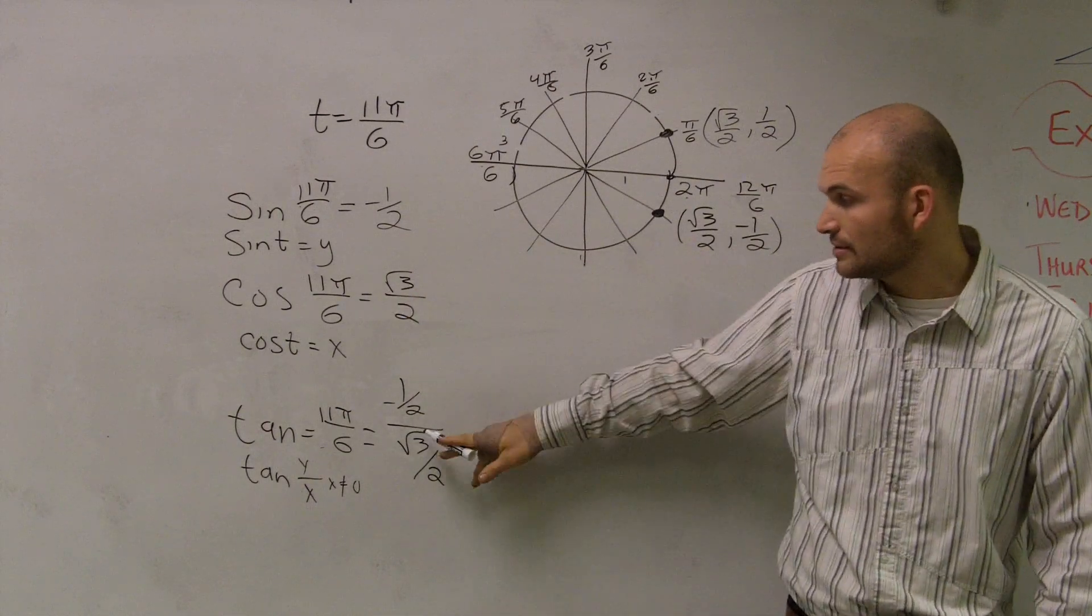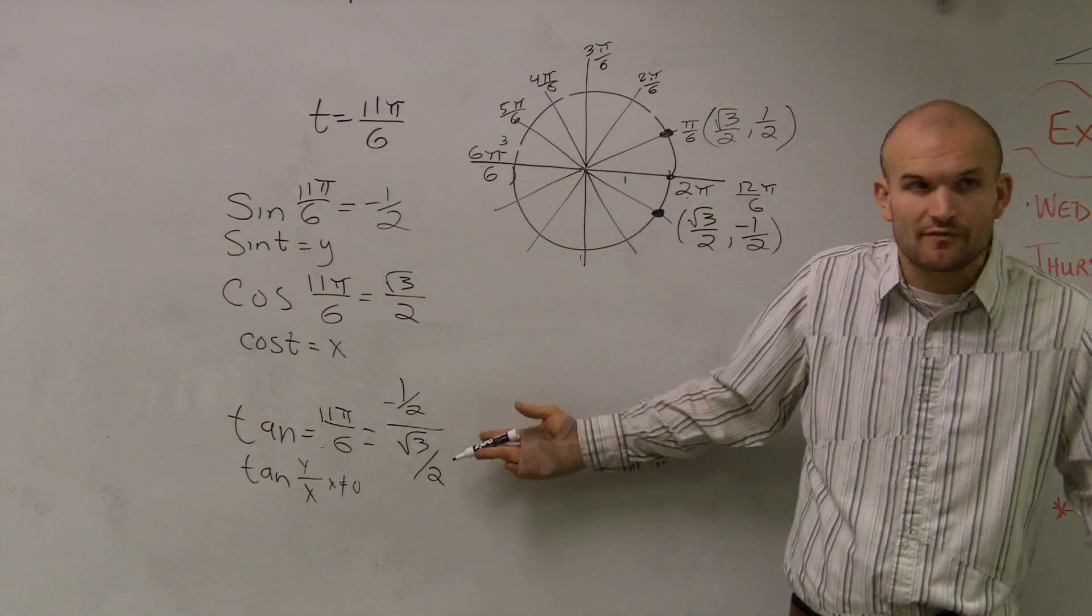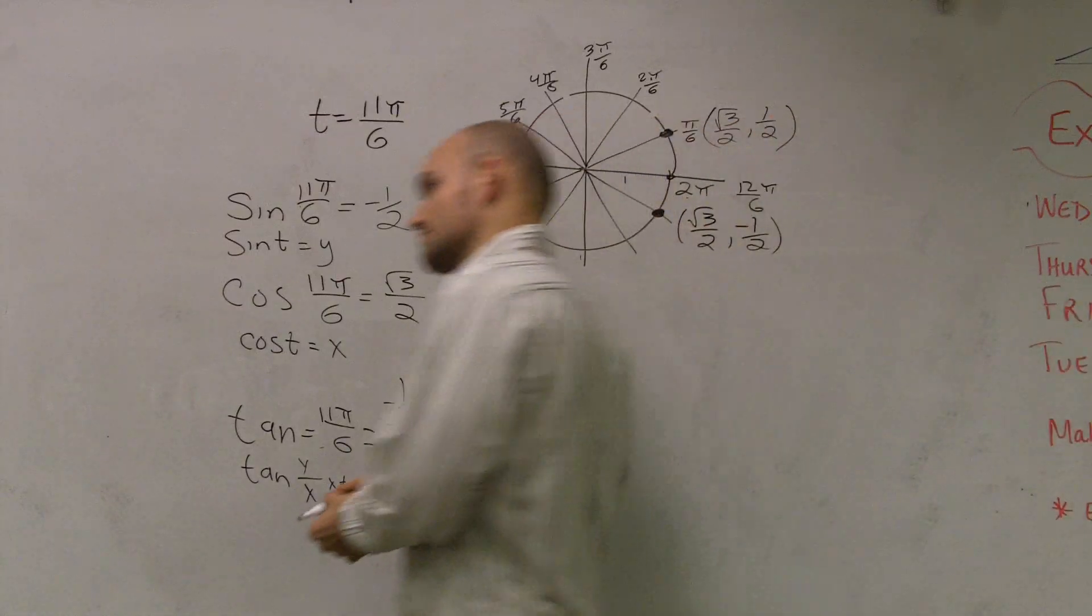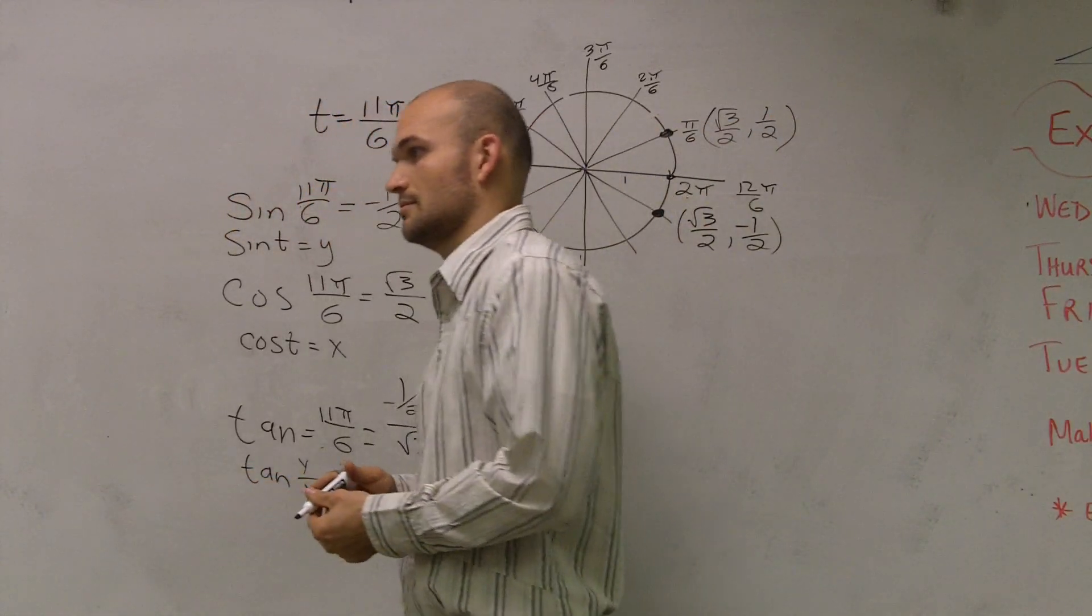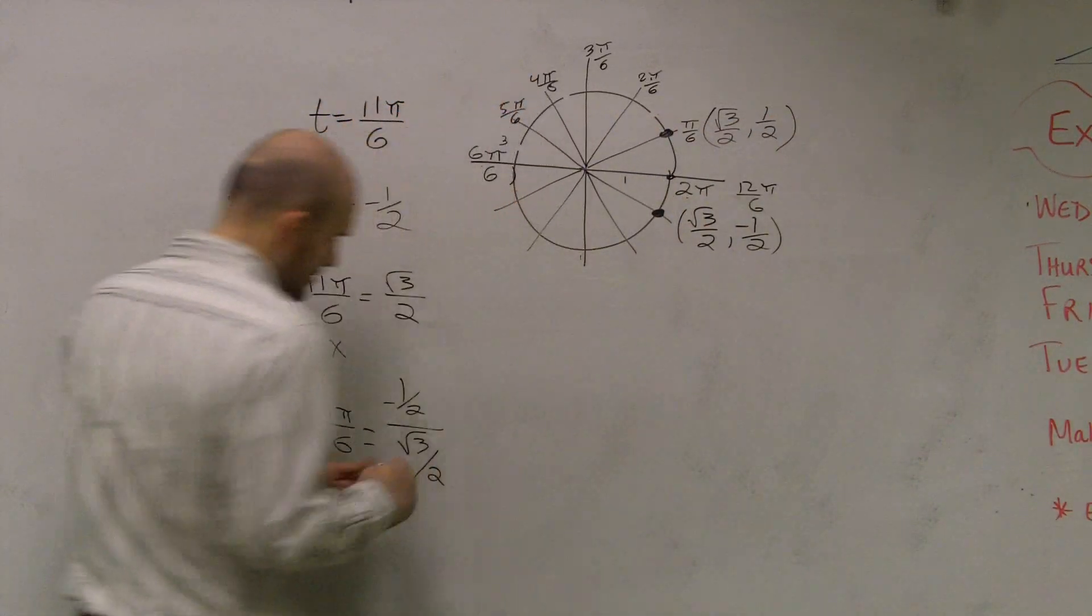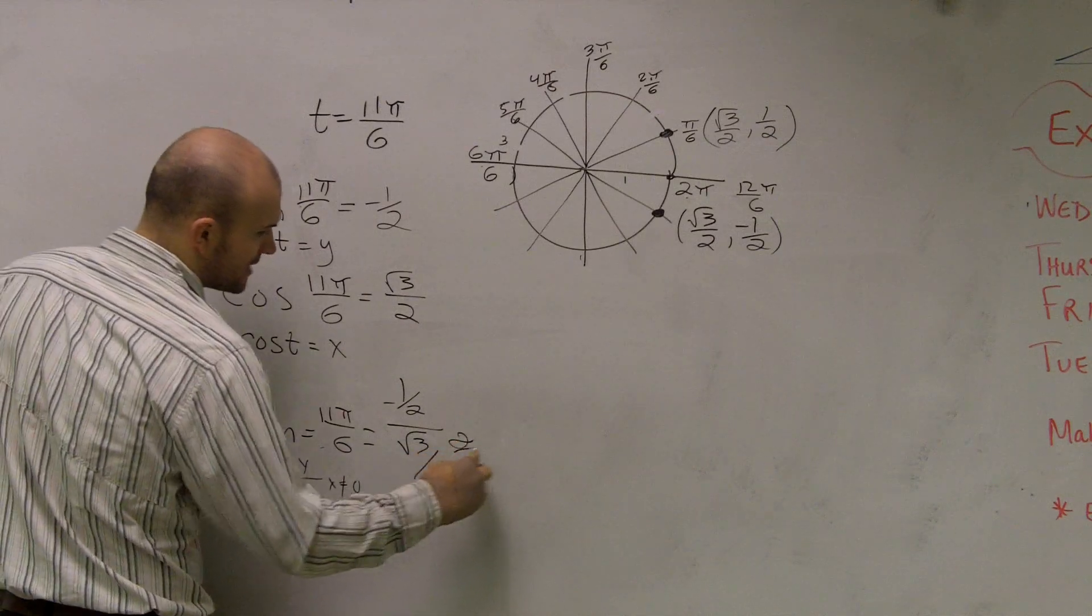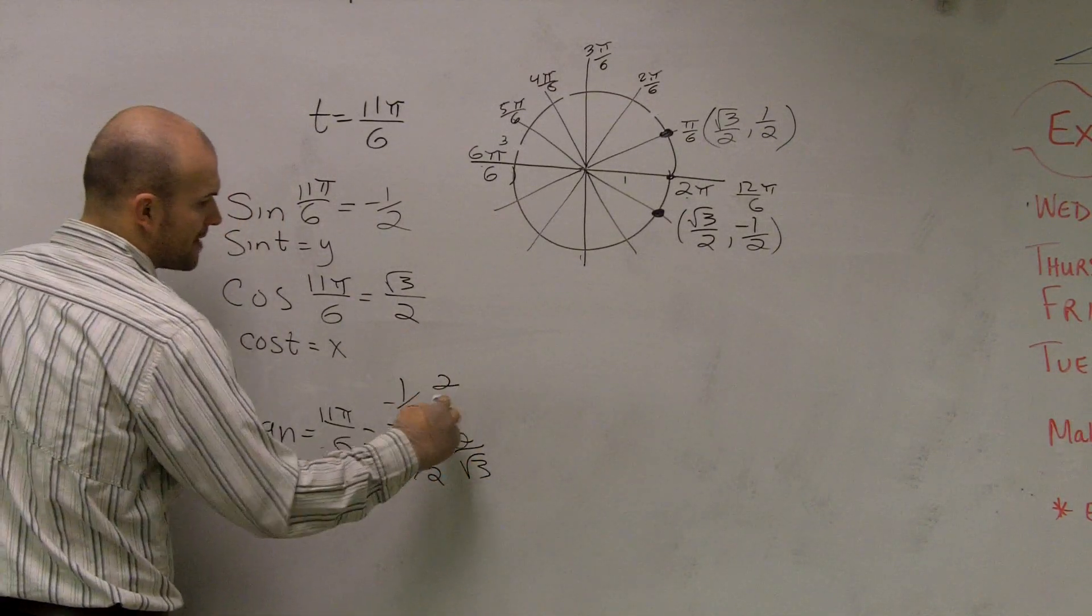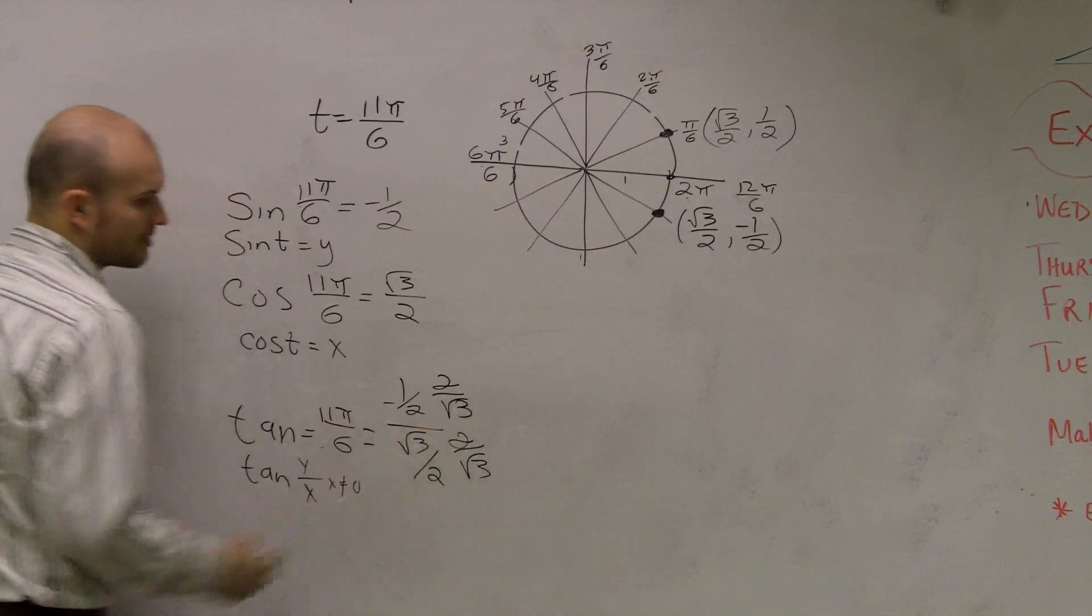So we're going to have to rationalize the denominator. I can't have a fraction as my denominator. To do that, I need to multiply by my reciprocal. So I multiply my reciprocal on both sides.